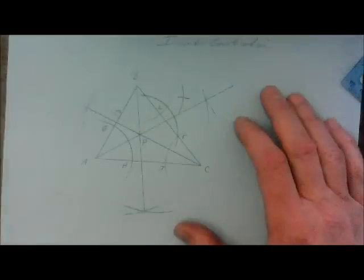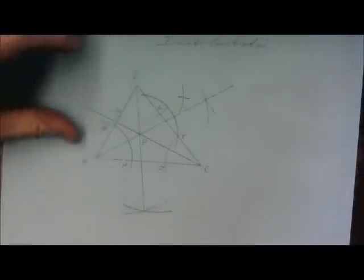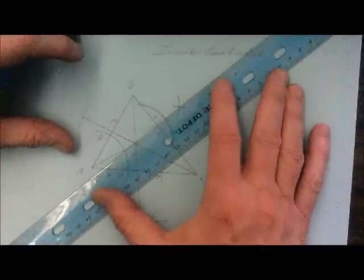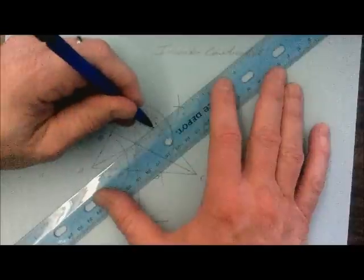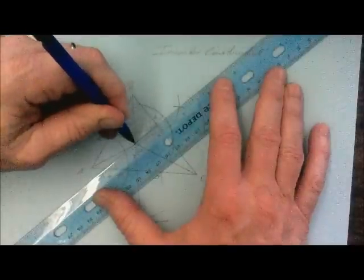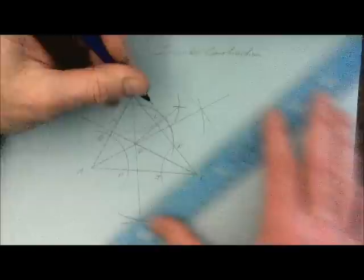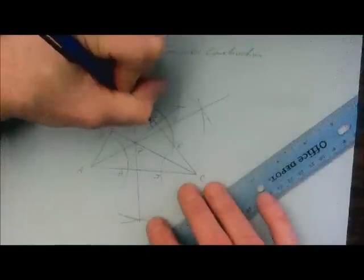And if I connect that intersection back to point P, what it does is it actually creates a line perpendicular to BC through point P. And that is the definition of the distance to a side.